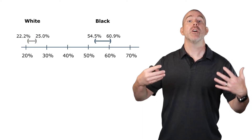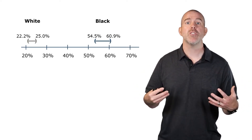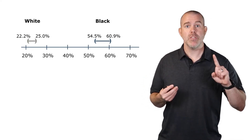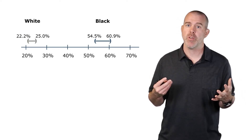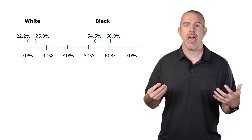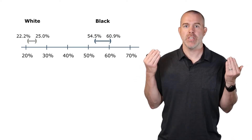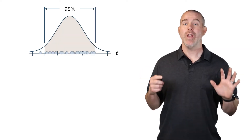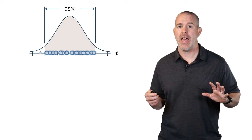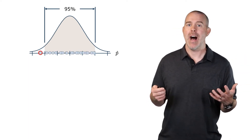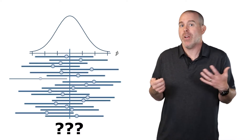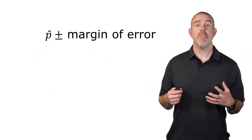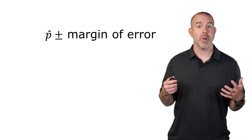Now we can start to draw conclusions — this is why it's called inferential statistics. We infer something about the population. We should be careful: this is just one school district, so we really should only infer something about this district. But we can say there is clearly a difference in the discipline rate between these two groups. We still don't know if we have one of the 95% of intervals that are correct, or one of the 5% that are not.